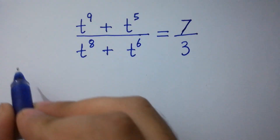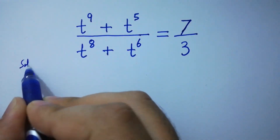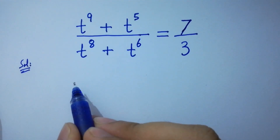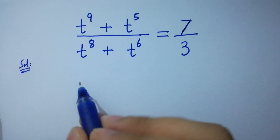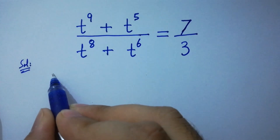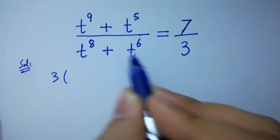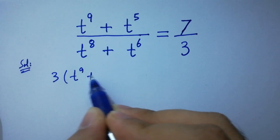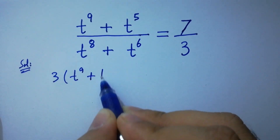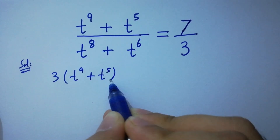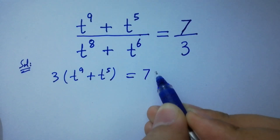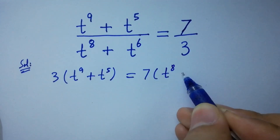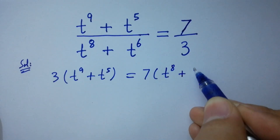Let's have a solution. To solve this, apply cross multiplication: 3 times t to the power 9 plus t to the power 5, equals 7 times t to the power 8 plus t to the power 6.